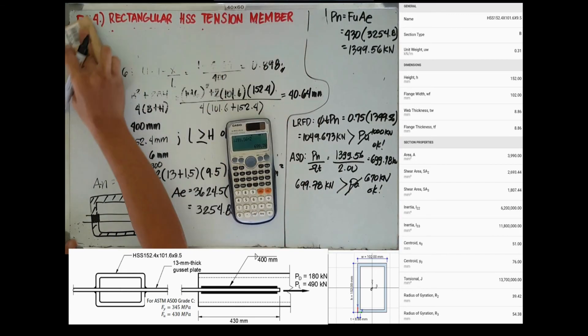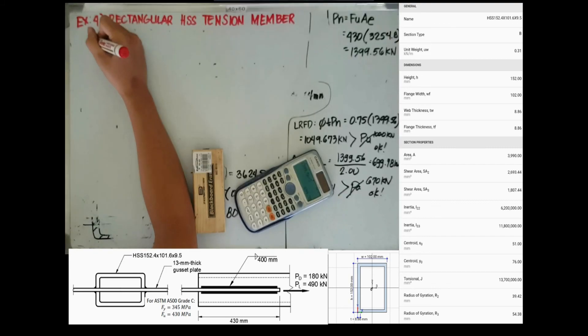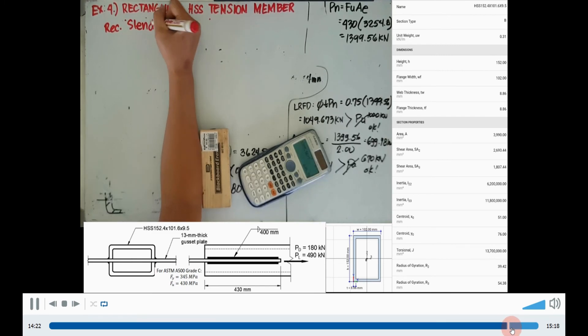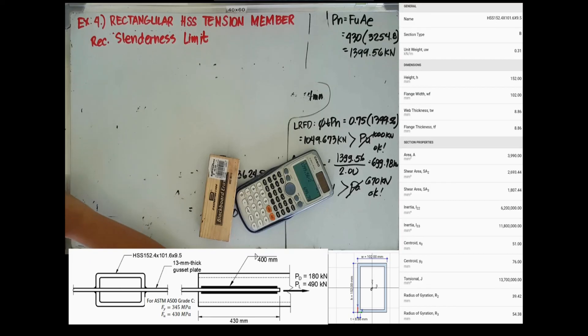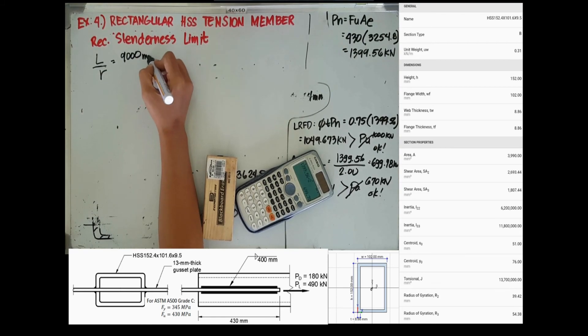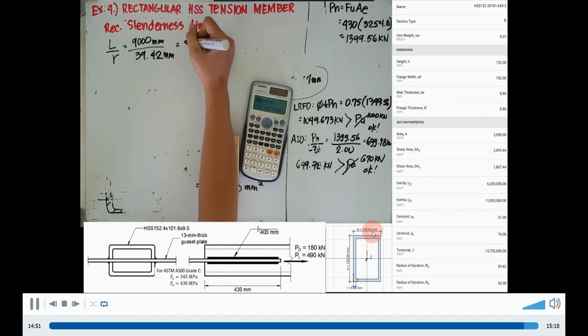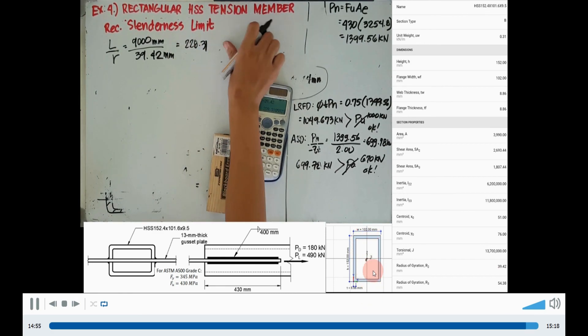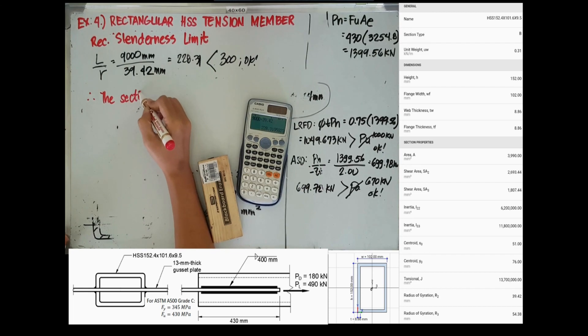The last requirement is to determine the slenderness limit by dividing the overall length of the member by the radius of gyration. Our radius of gyration is 39.42, since this is the direction of the welded connection. So the slenderness limit is 228.31 and it is less than 300.